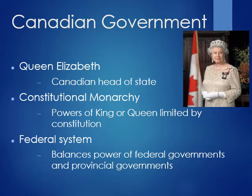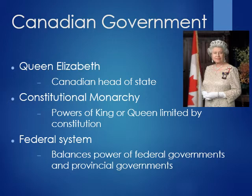Being that they have a queen, the Canadian government is technically a monarchy, but it's a special kind called a constitutional monarchy. A constitutional monarchy is when there is a king or a queen, but their powers are very small and limited by a constitution. This constitution takes away most of their power and allows them to still be a ceremonial figurehead and head of state.